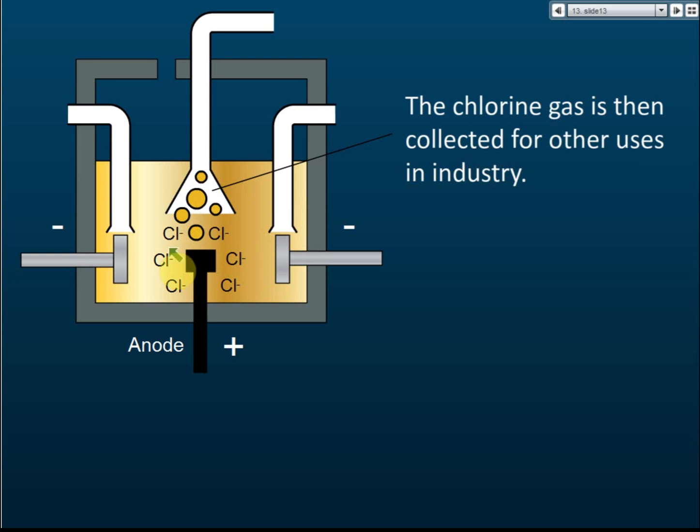At the anode, the chloride ions are discharged to form chlorine gas. At the cathode, the sodium ions are discharged to form sodium metal.